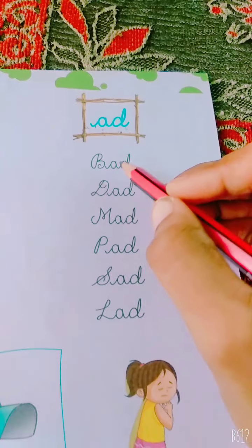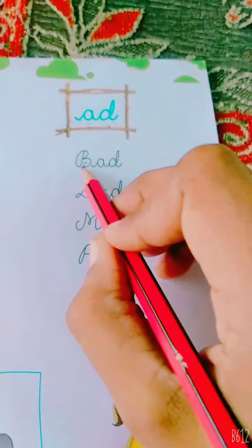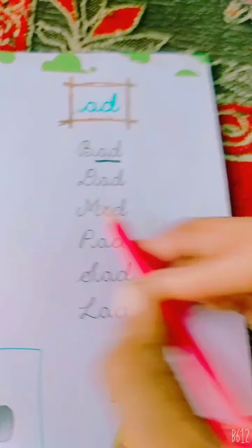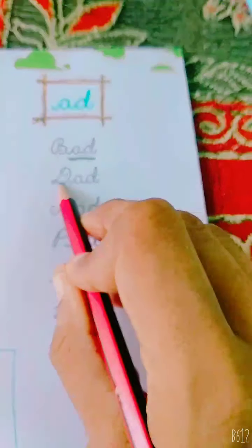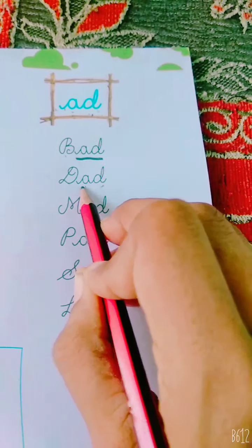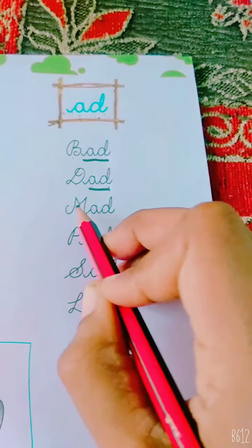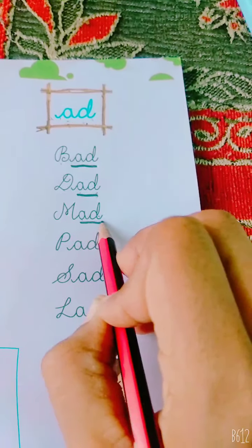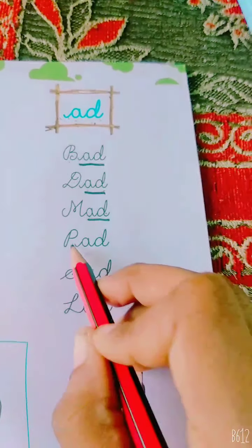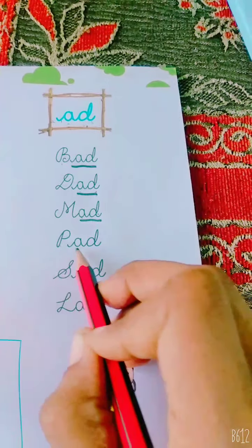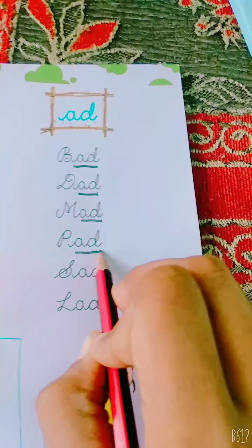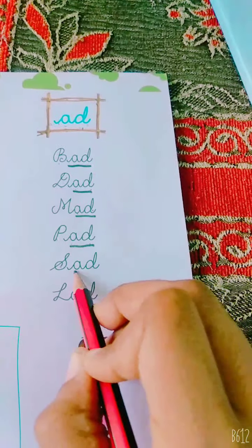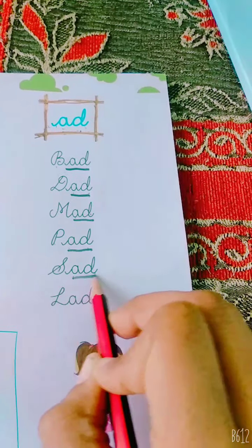See everyone. B, A, D — bad. D, A, D — dead. M, A, D — mad. P, A, D — pad. S, A, D — sad.